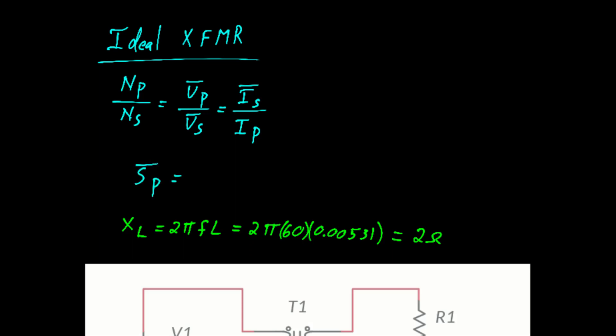For an ideal transformer, the complex power in the primary is equal to the complex power in the secondary. The final property we should pay attention to is the primary impedance is equal to the turns ratio squared multiplied by the secondary impedance. That's known as reflection. And I'll come back to that later in this video to show how it can save you a lot of work.